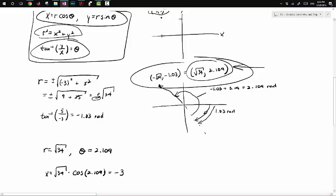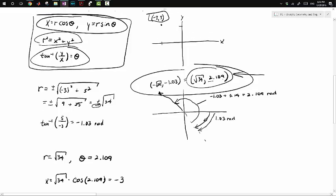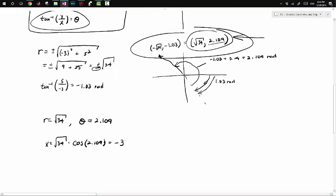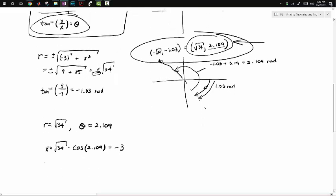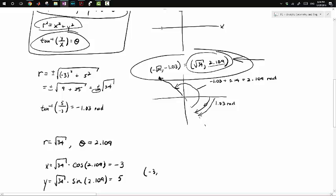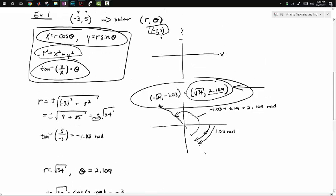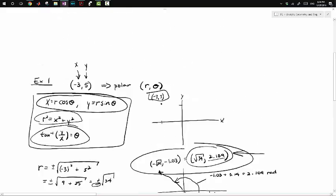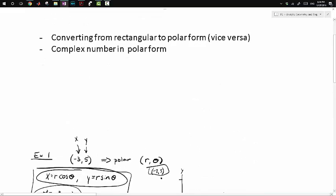If you punch it in the calculator, you'll get -2.98, but that's because we rounded the 2.109 radian value. Then Y = R sin(theta), so √34 × sin(2.109), which is about 5. We get back (-3, 5), which is what we started with. That's how you switch from rectangular to polar.